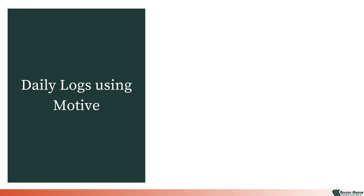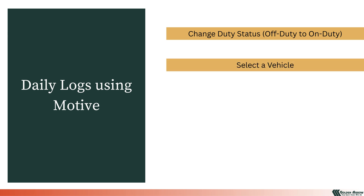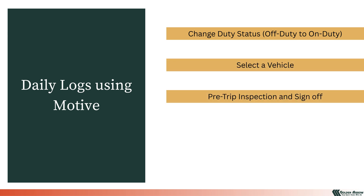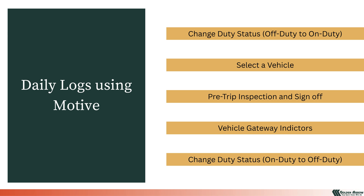When you are logged into the Motive Driver app, you're ready to begin your daily log entry. In this section, you will first learn how to change your duty status from off-duty to on-duty. Next, you will learn how to select your vehicle and perform a pre-trip inspection. You will also be introduced to the connection indicators on the vehicle gateway. Finally, this section will conclude with how to change your duty status back to off-duty.